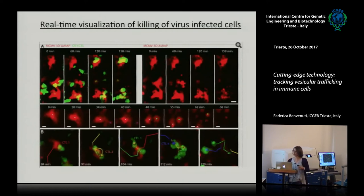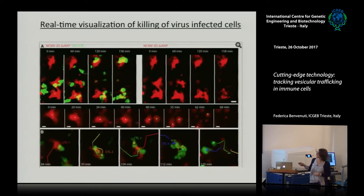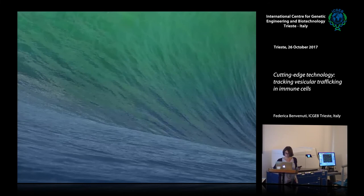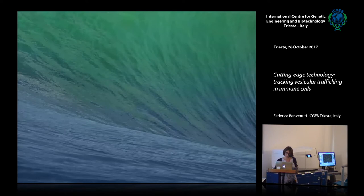This allowed seeing that when you have many CTLs — green in this case — attacking one red virus-infected cell, you really can have elimination of the infected cell. There are many examples at different zoom levels, and it's really nice to see the end result.